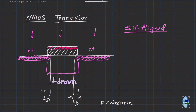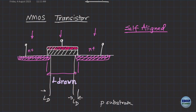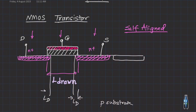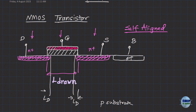So let us start with this as my drain, this is my gate, and this is my source. We need to make a connection to the substrate — the substrate is already P-minus, lightly doped. We do another doping here and this is called body or bulk. This is P-plus — P-plus connects with P-minus and forms a very good contact. We have N-plus source and drain diffusions. This is what an NMOS transistor looks like.